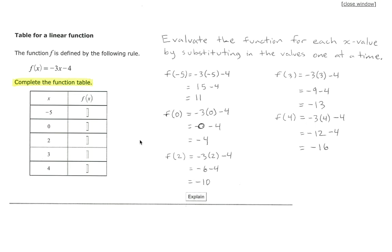We next substitute our 2. f of 2 is equal to negative 3 times 2 minus 4. Negative 3 times 2 is negative 6 minus 4 is negative 10.